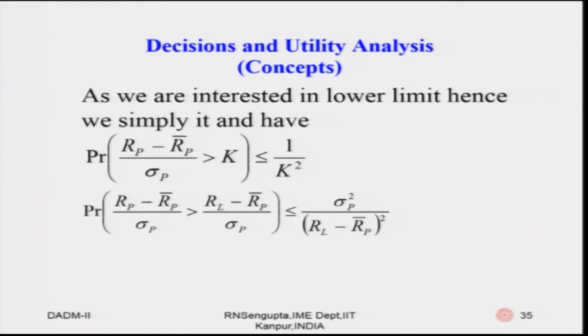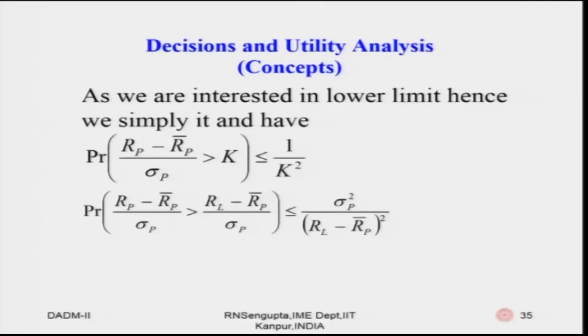Since we are interested in the lower limit — that is, the negative values — if you remember, the objective was minimization of the probability that R_p is less than R_L. We remove the absolute value. In place of x it is R_p, in place of E(x) it is R̄_p, and in place of V(x) it is σ(R_p). So the probability that (R_p − R̄_p) / σ(R_p) is greater than k is less than or equal to 1/k².